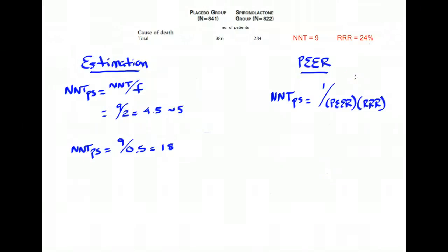If you need to refresh your memory on how to calculate a relative risk reduction, I also have a video on that topic using this same RALS data. So where do we get this PEER or patient expected event rate from? Well, there's a few places.